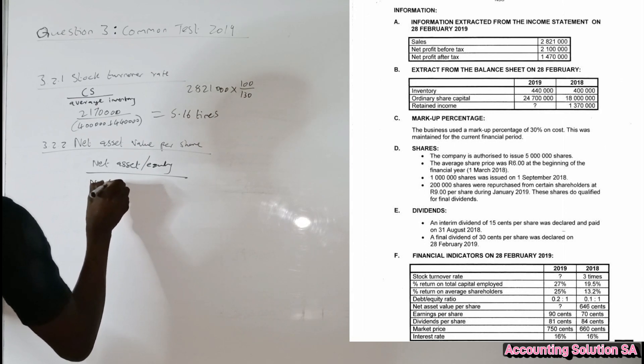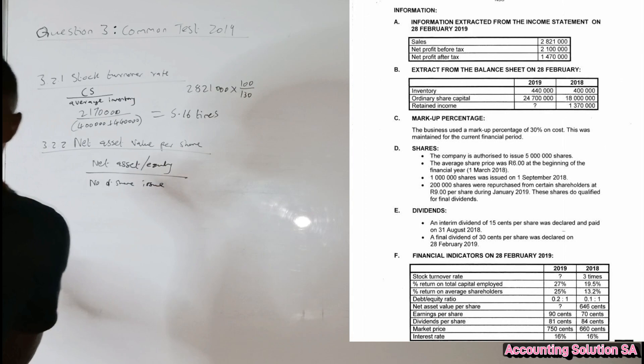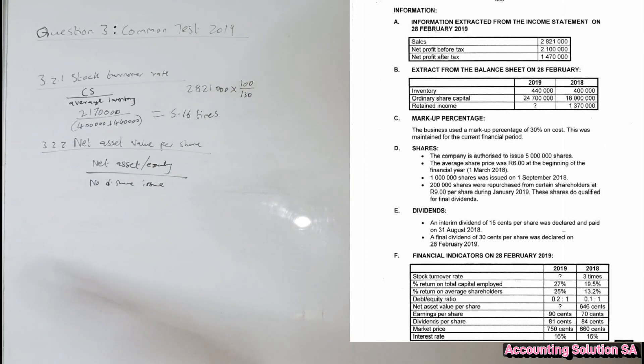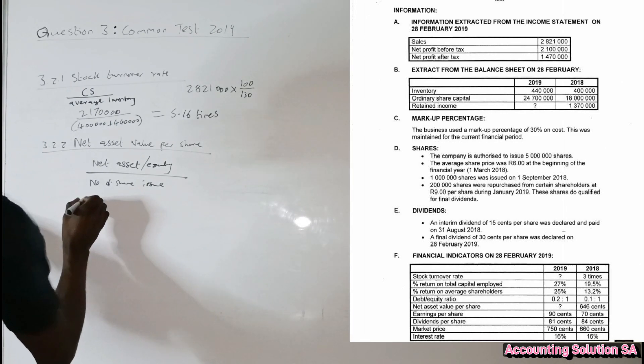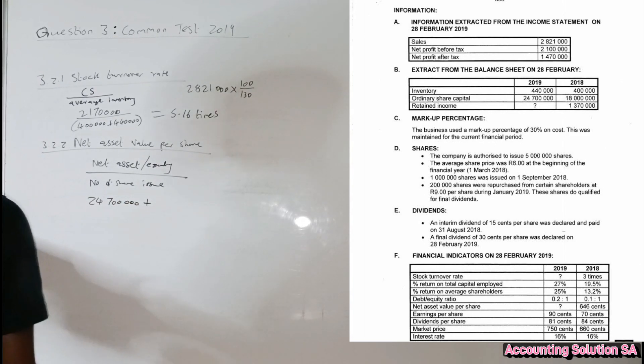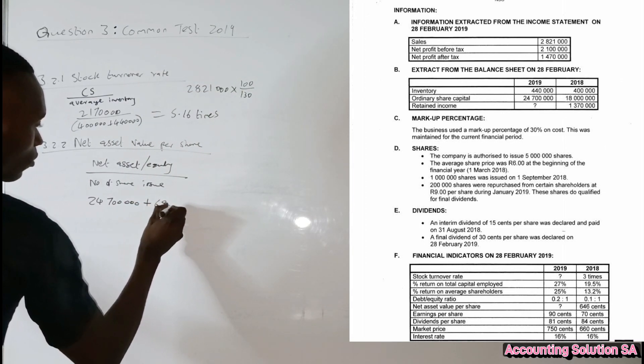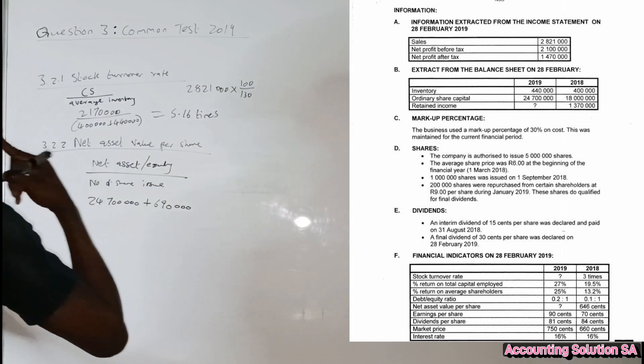Our equity for 2019 is how much? We have 24 million of ordinary share capital, 24 million 700 thousand, plus the one that we calculated guys on the previous question of retained income which is 6.9.